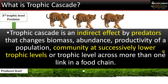Trophic cascade is an indirect effect by predators that changes biomass, abundance, and productivity of a population or a community at successively lower trophic levels. At each trophic level, it grows more than one link in a food chain.